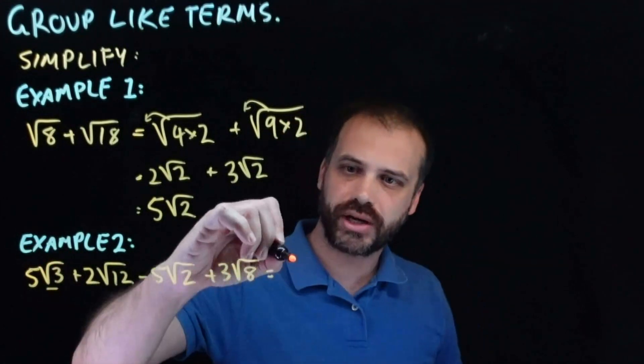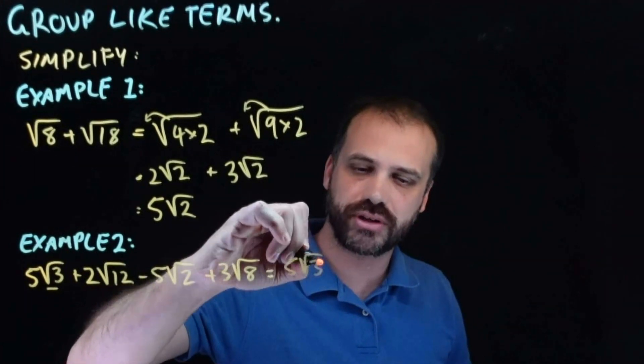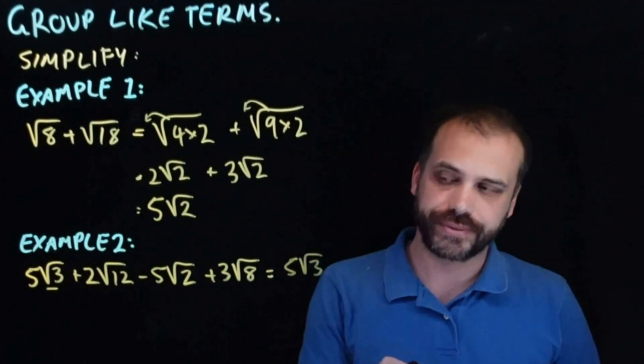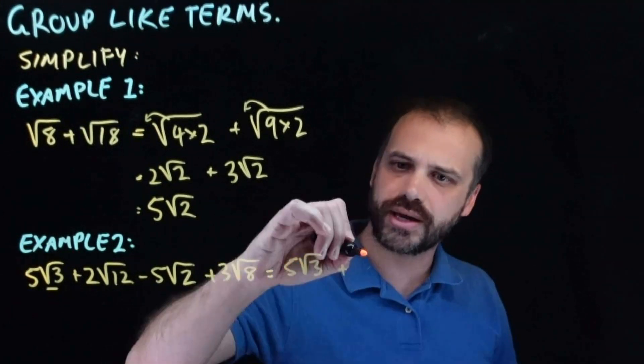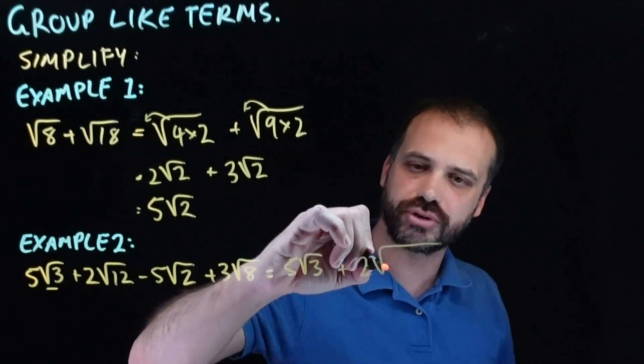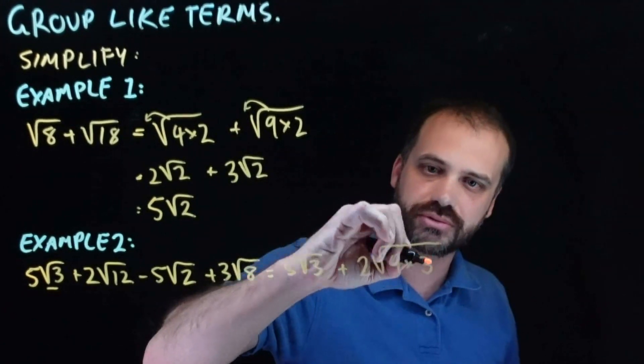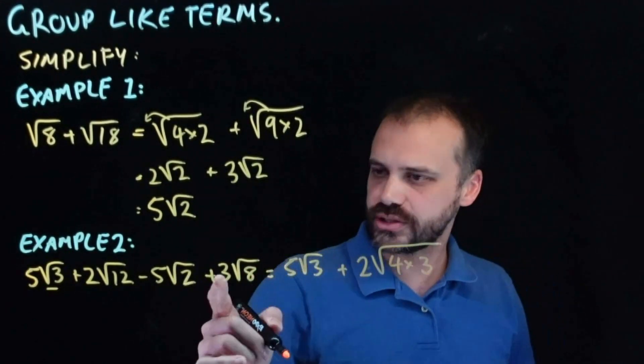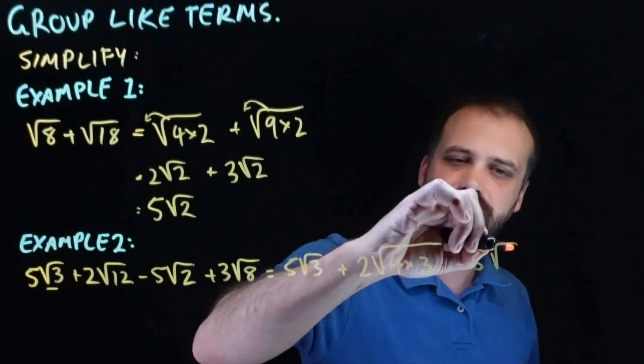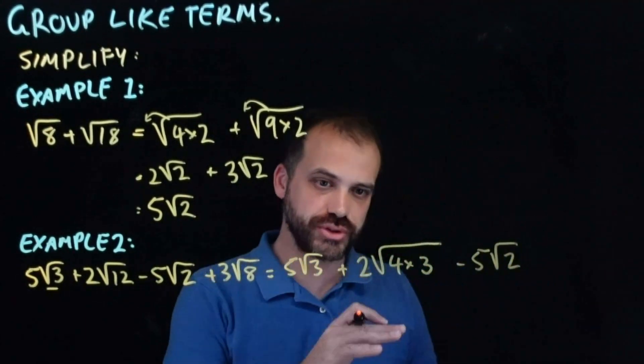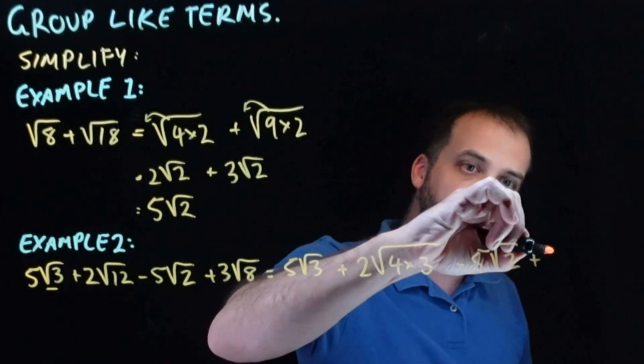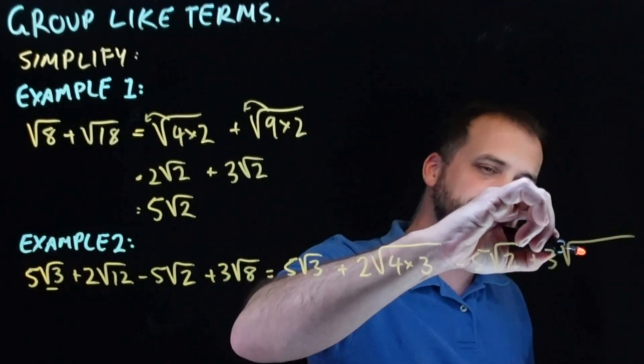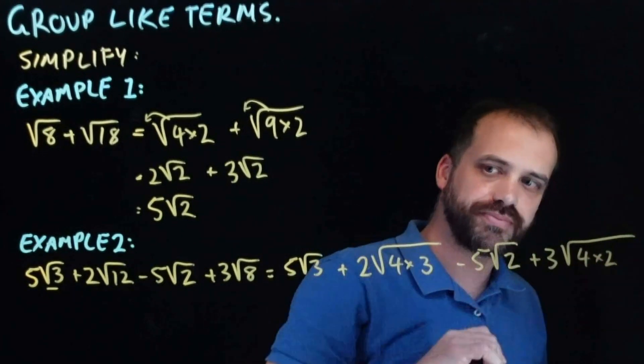5 root 3. I can't simplify that any further than that. 5 root 3 is 5 root 3. 2 root 12. I look at that and I say wait, that's the same as 2 root 4 times 3. Minus 5 root 2. I can't simplify that any further. 5 root 2 is 5 root 2. And then 3 root 8. I can't simplify that. 8 is the same as 4 times 2.